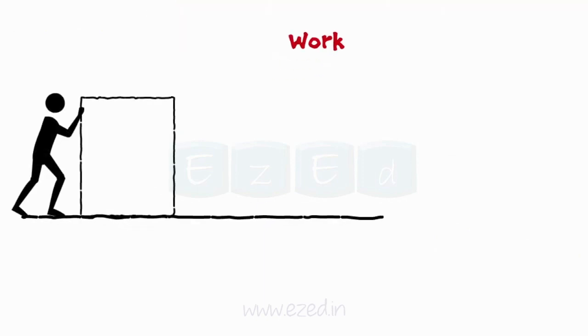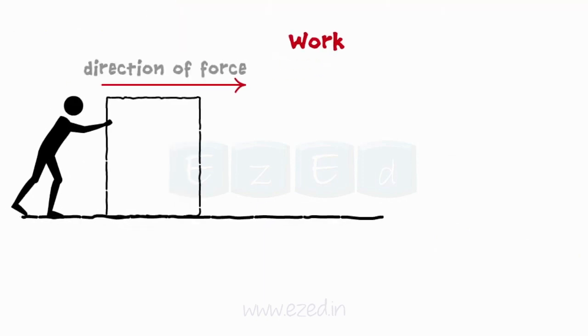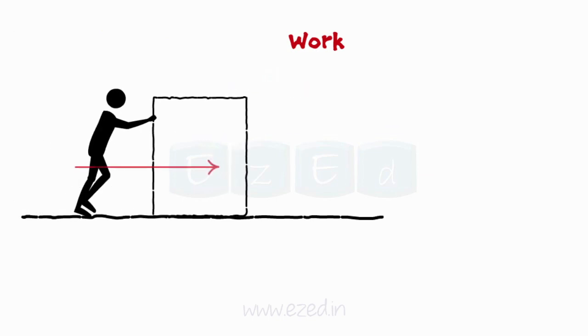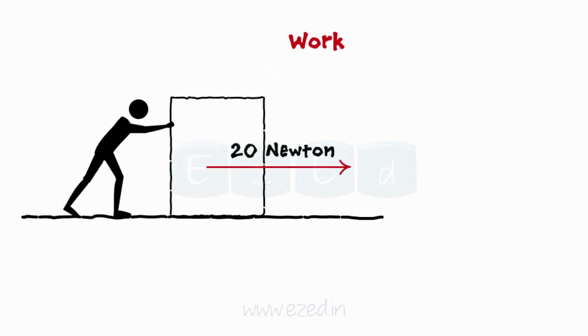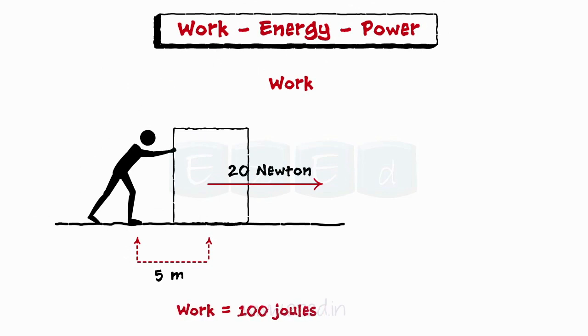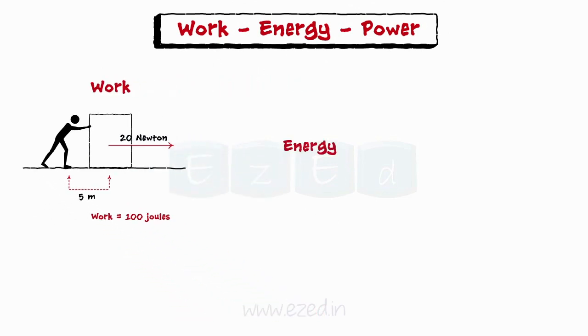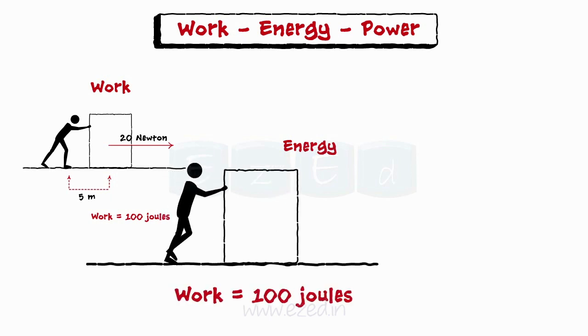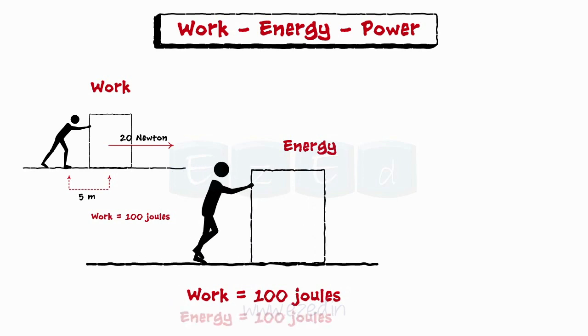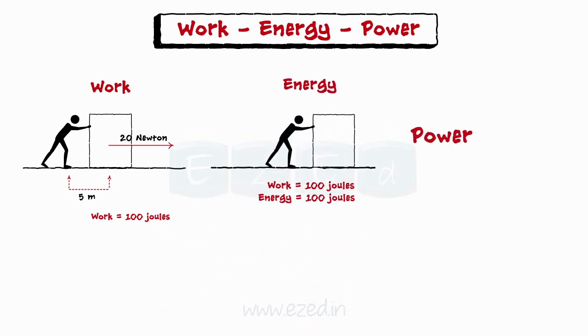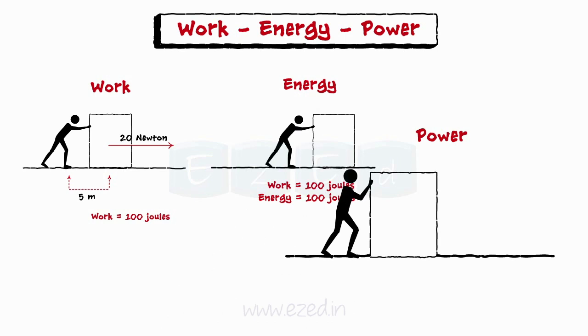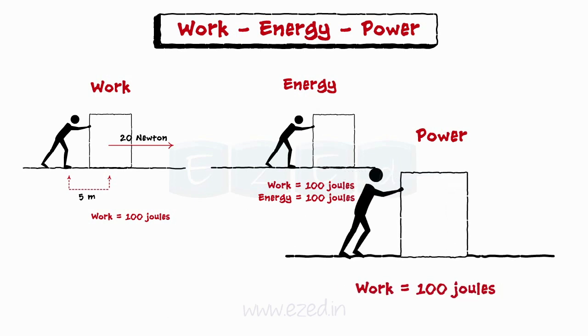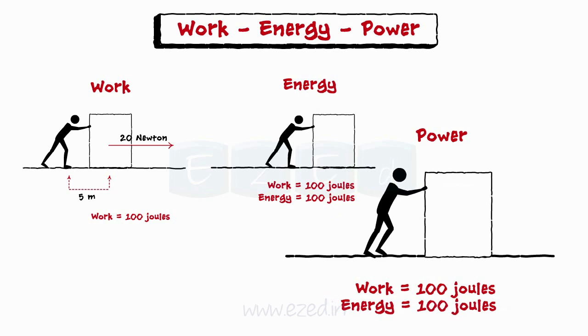Let us now see how work, energy and power are interrelated. Work refers to an activity involving force and movement in the direction of force. Suppose a force of 20 N is used to push a block about 5 meters, then the work done by force is 100 joules. Energy is the capacity of doing work — it is like currency. To do 100 joules of work, you need to spend 100 joules of energy. Power is the rate of doing work or the rate of using energy. If you do 100 joules of work using 100 joules of energy, the power is 100 watts.